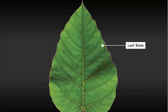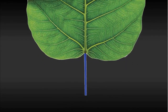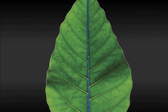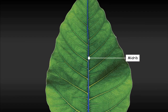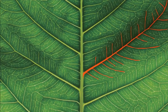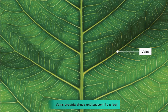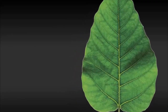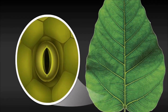The flat and broad part of the leaf is called the leaf blade or lamina. The leaf blade is attached to the stem of the plant through a tiny stalk called the petiole. A thin line runs from the center of a leaf towards its tip — this is the central vein, also known as the midrib. There are numerous tiny lines that run throughout the leaf; they are called veins. All these veins, along with the midrib, provide shape and support to the leaf.